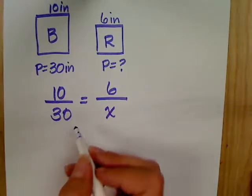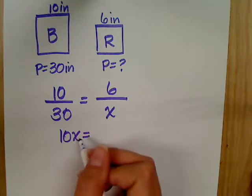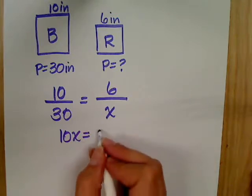I can cross multiply. 10 times X is 10X, and 30 times 6 is 180.